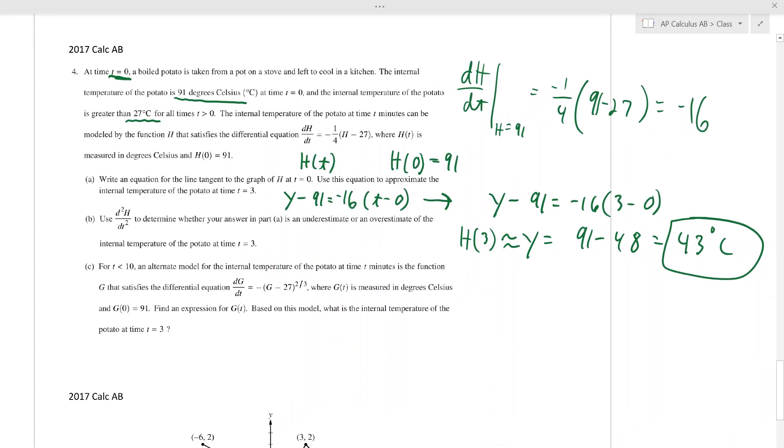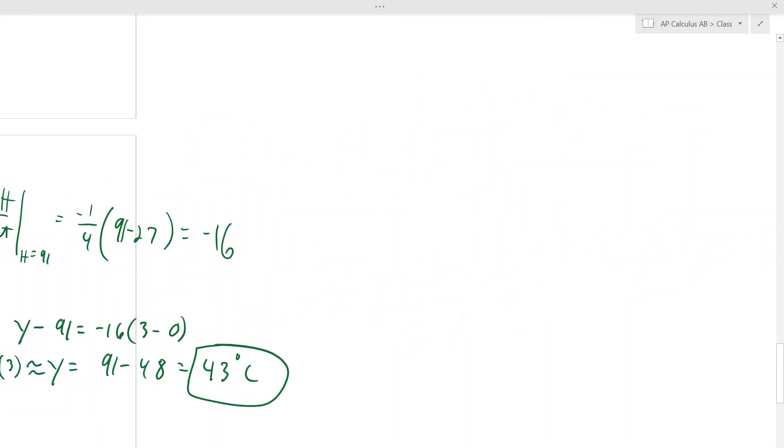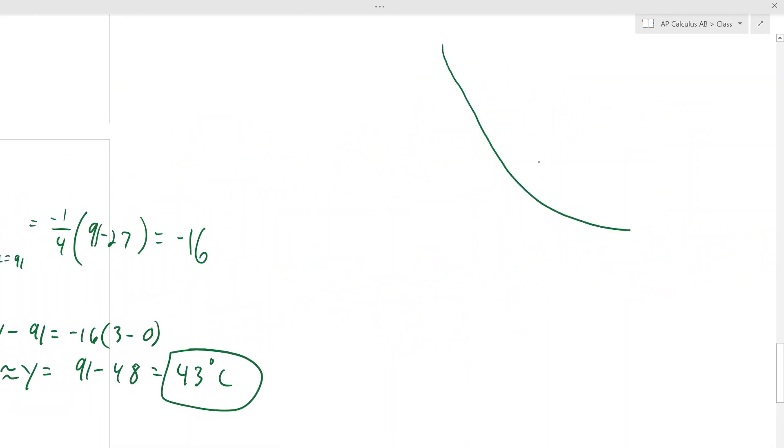Then it says use the second derivative to determine if your answer in a is an under or overestimate. The reason why they're asking us to use the second derivative is because the second derivative tells us the concavity. If you have a curve that's concave up and you find a tangent line to it, it doesn't matter if it's increasing or decreasing. If you find a tangent line to it, no matter where you draw your tangent line, it's going to be below the curve.